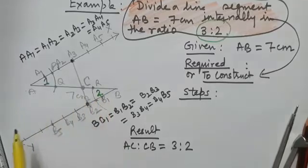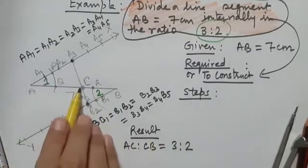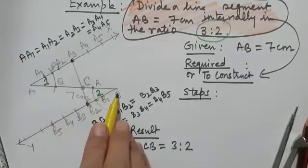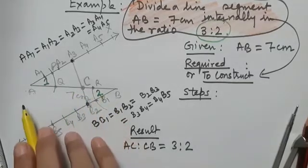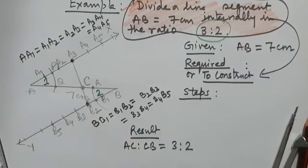In the examination it might be asked: what is the length of AC, or what is the length of CB? You can measure these with the help of a ruler and write down your answer.